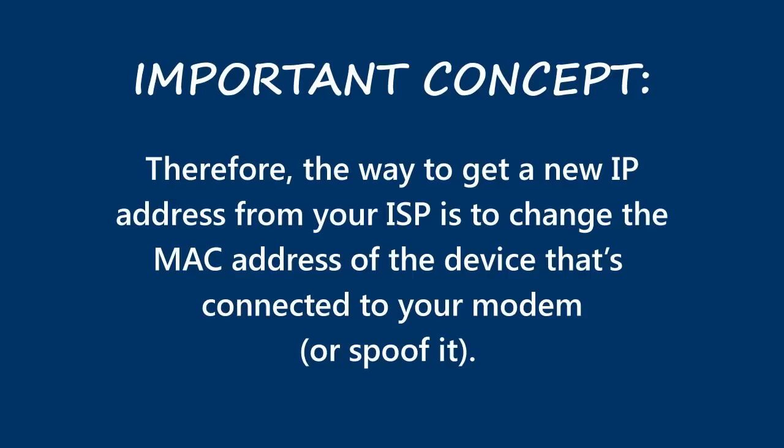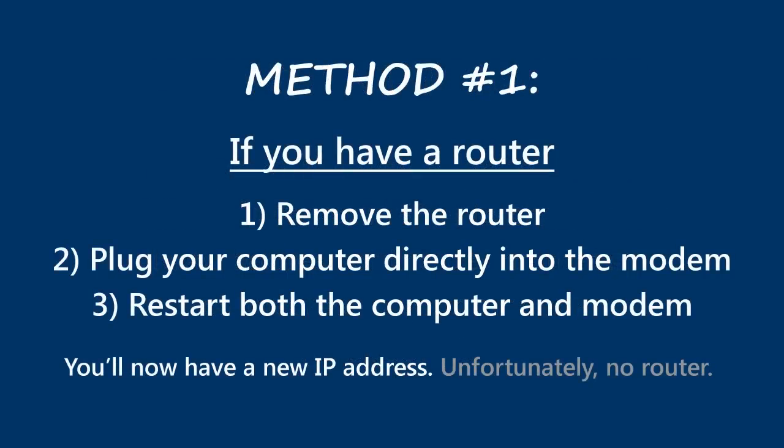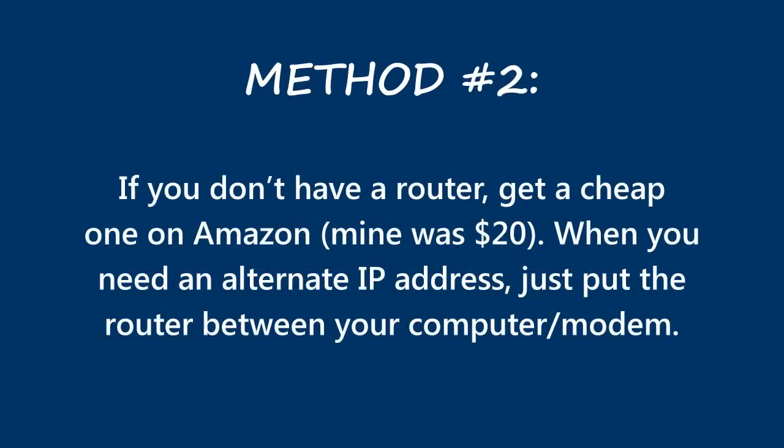That device — the router or computer — is identified by what's called a MAC address, or machine address. So in practice, the way to get a new IP address is to change the MAC address of the device connected to your modem. There are four ways to do this. First, if you have a router connected to your modem, remove the router, plug your computer directly into the modem, restart both the computer and modem, and you'll have a new IP address.